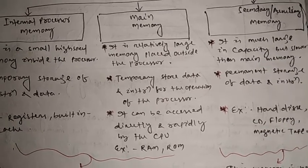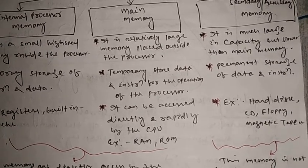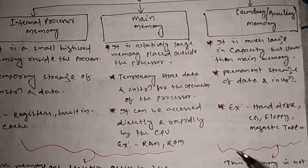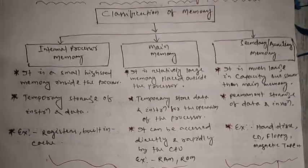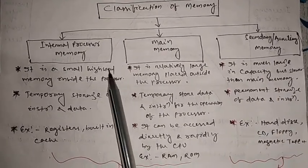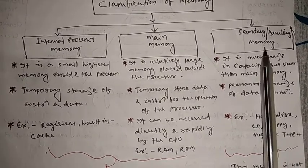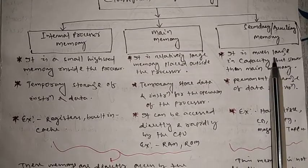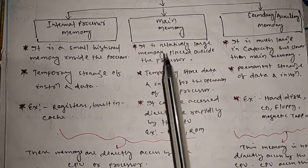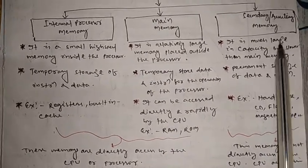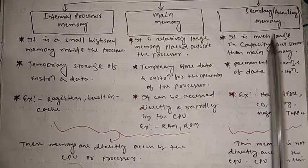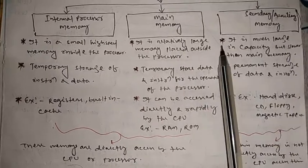Examples of secondary memory are hard disk, CD, floppy, and magnetic tape — these are examples of secondary or auxiliary memory. So, in classification of memory, there are three types: internal processor memory, main memory, and secondary or auxiliary memory. Both internal processor memory and main memory are directly accessed by the CPU or processor, but secondary and auxiliary memory cannot be directly accessed by the CPU, and their size is larger than the other memories.